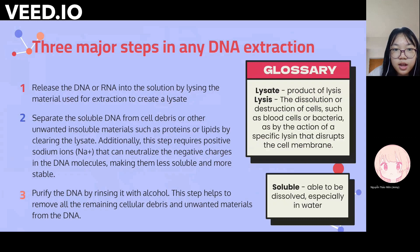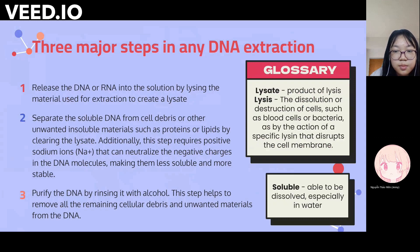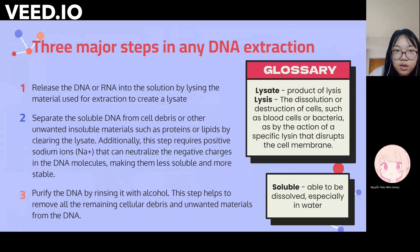First, we need to release the DNA or RNA into the solution by lysing the material to create a lysate, which is a product of lysis — the dissolution or destruction of cells such as blood cells or bacteria. Then you need to separate the soluble DNA from the cell debris or other unwanted insoluble materials such as lipids by clearing the lysate. Then you need to put the DNA on a purification matrix and clean it with alcohol, which helps to remove all the remaining cellular debris and unwanted materials from your DNA.